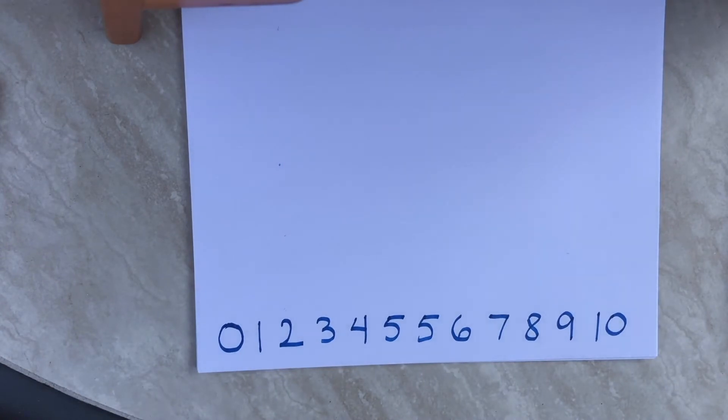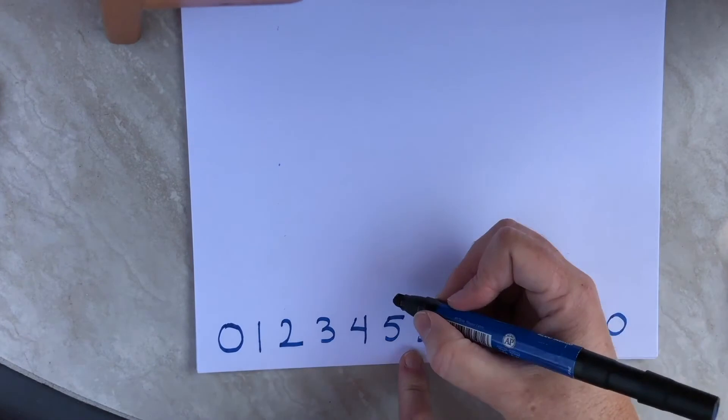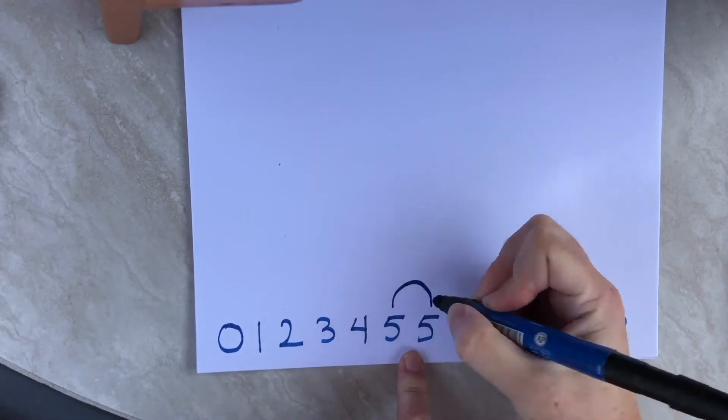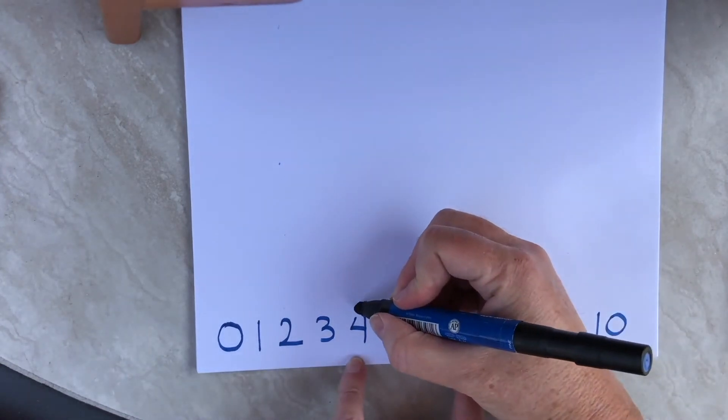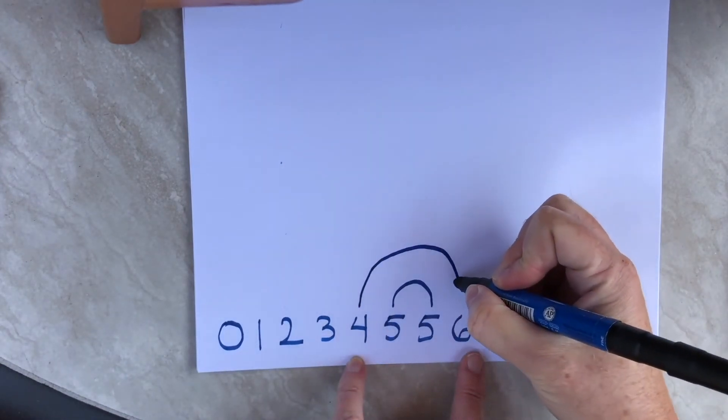Now the next thing that you do is you're going to start with the two fives and make a little arch to connect them together, and then we're going to look for two more numbers that add up to ten. Five and five add up to ten, four and six also add up to ten. So I'm going to make another little arch to connect those.